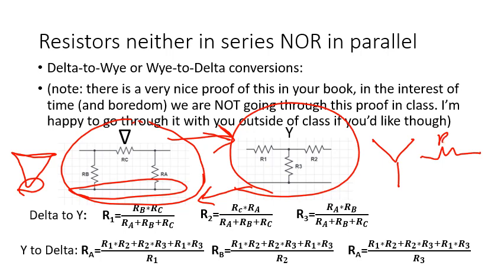So basically if I take RC from my delta, RB, and RA, and they were connected between points X, Y, and Z here, I could replace those three resistors between those three connection points with instead a Y configuration like R1, R2, and R3.